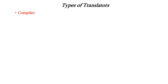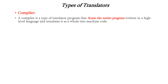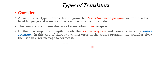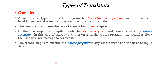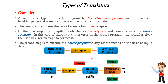The next type of translator is the compiler. The compiler translates the entire program or entire source code into the machine code as a whole. This task is performed in two steps. In the first step, the compiler reads the source program and then converts it into the object code. In this step, if there is any syntax error, it is reported to the user so that the user can correct the errors. In the second step, it executes the object program and displays the results on the basis of the input data given by the user. This diagram illustrates the concept of compiler. The compiler takes high-level language as input and produces low-level language as output. Source code is given to the compiler and if any errors are there, it is reported to the user. Otherwise, it is converted to an object file.